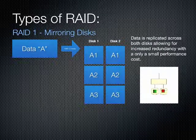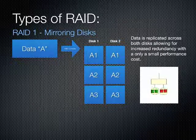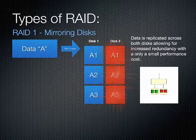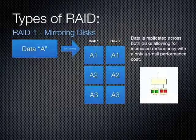RAID 1, on the other hand, also known as mirroring, can withstand data failures because all data is duplicated across each disk. While there are no storage or performance gains with RAID 1, it is a very common configuration due to the redundancy that it provides. A RAID 1 array can be repaired by simply inserting a new disk where one has failed.